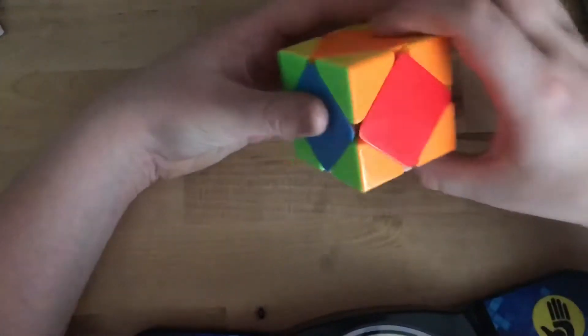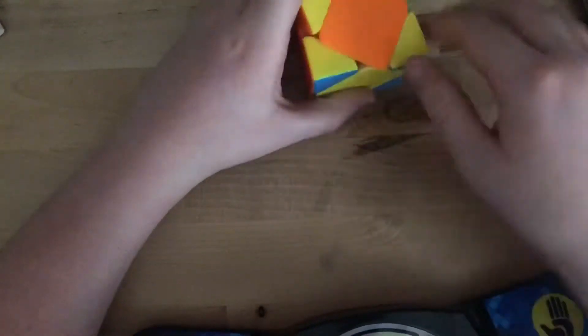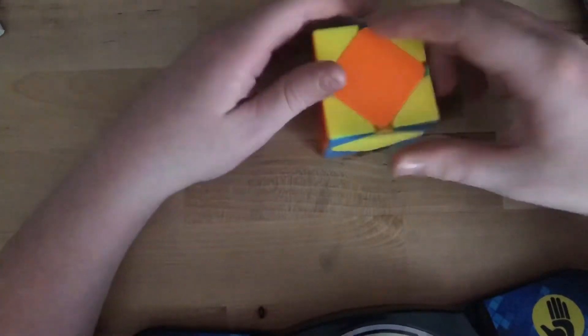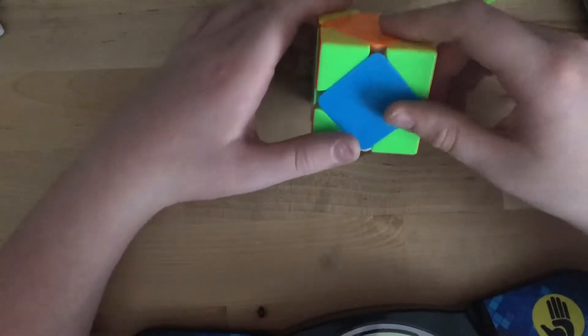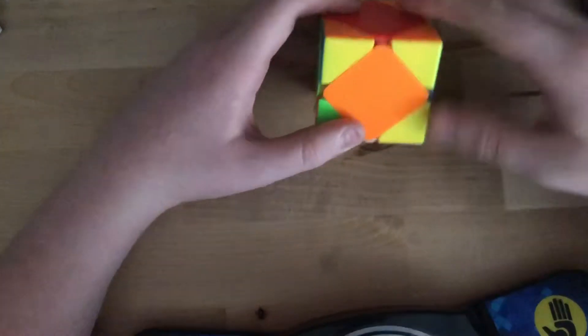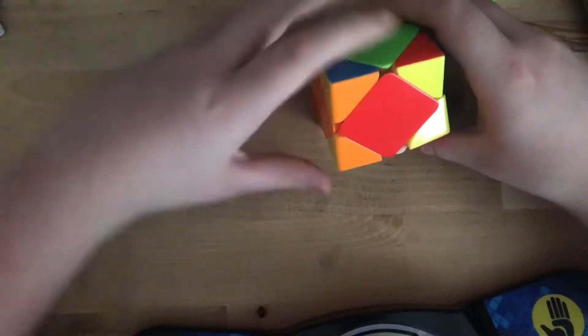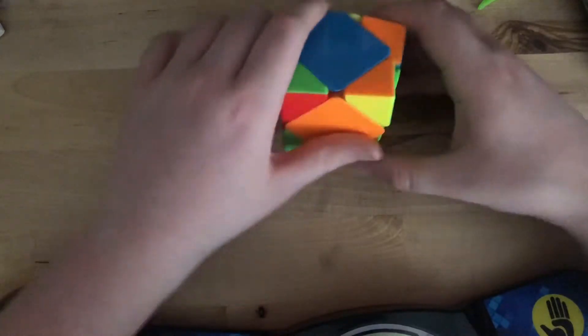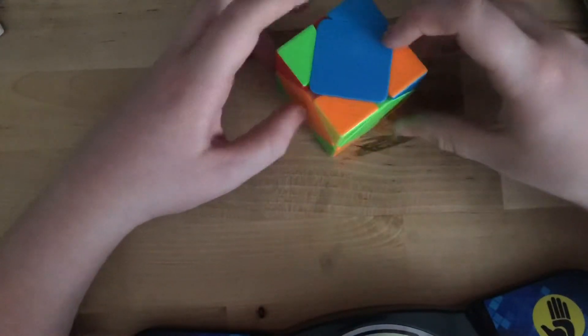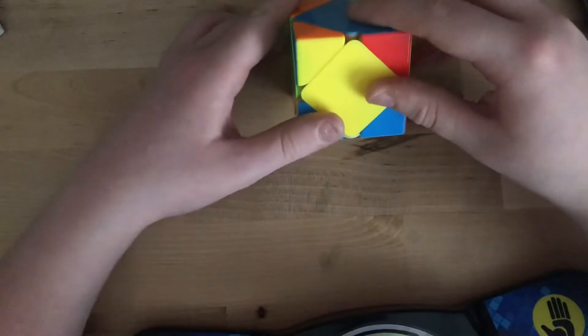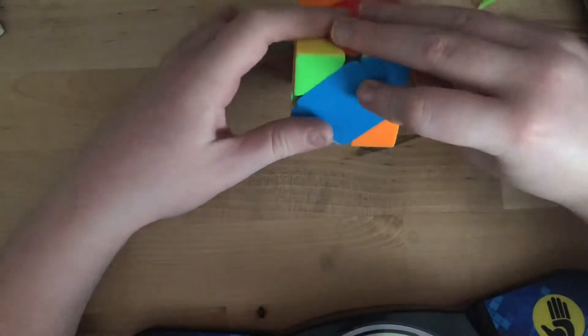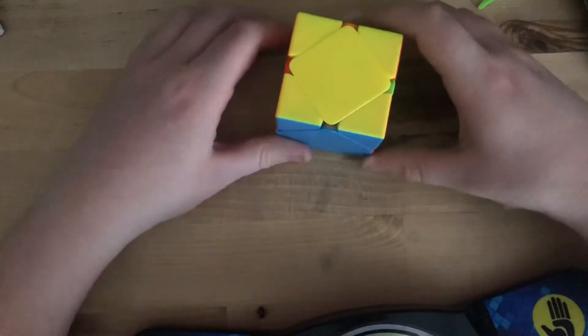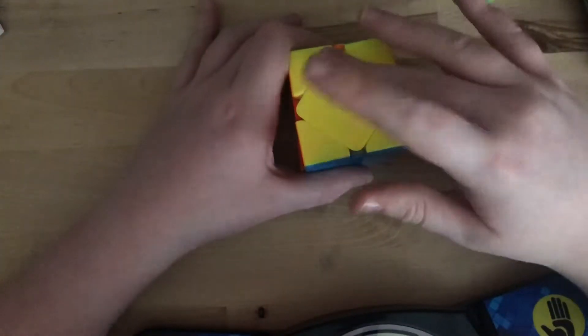Okay, I'm back and now we have a case where the four corners are solved but the yellow isn't there. So we're gonna do about the same algorithm, just follow what I do. Right prime, left, then flip the cube 180 and repeat it again. Right prime, left, right, left prime. And now the yellow center is there.